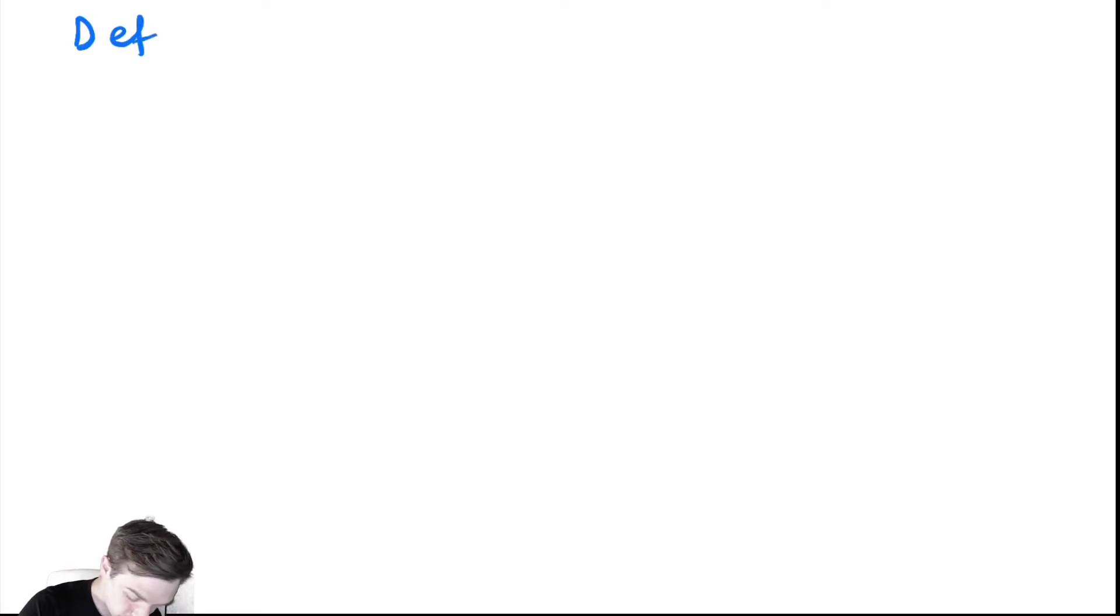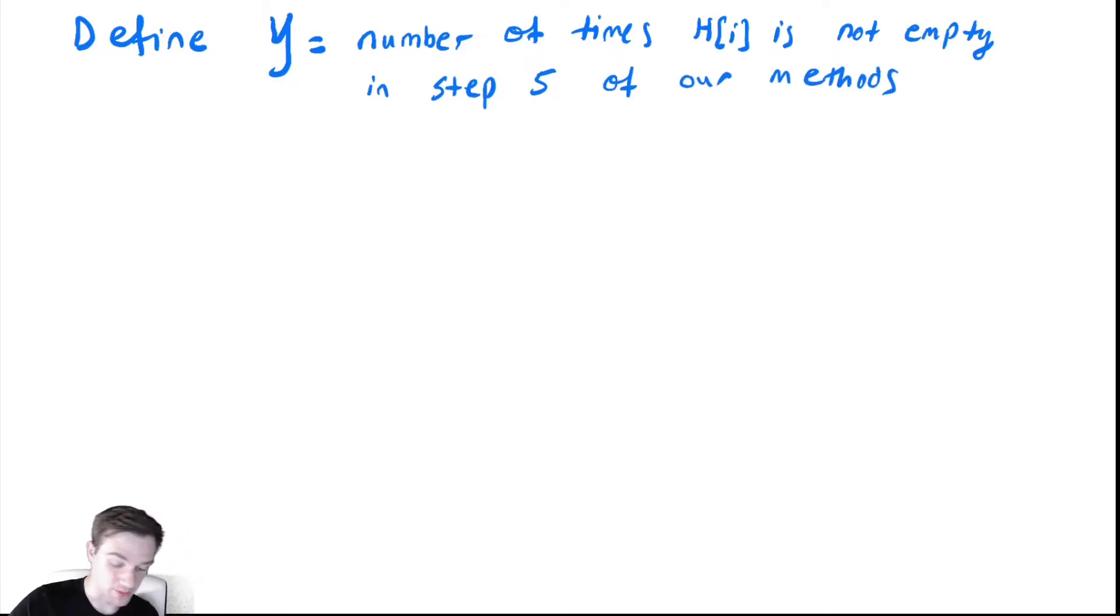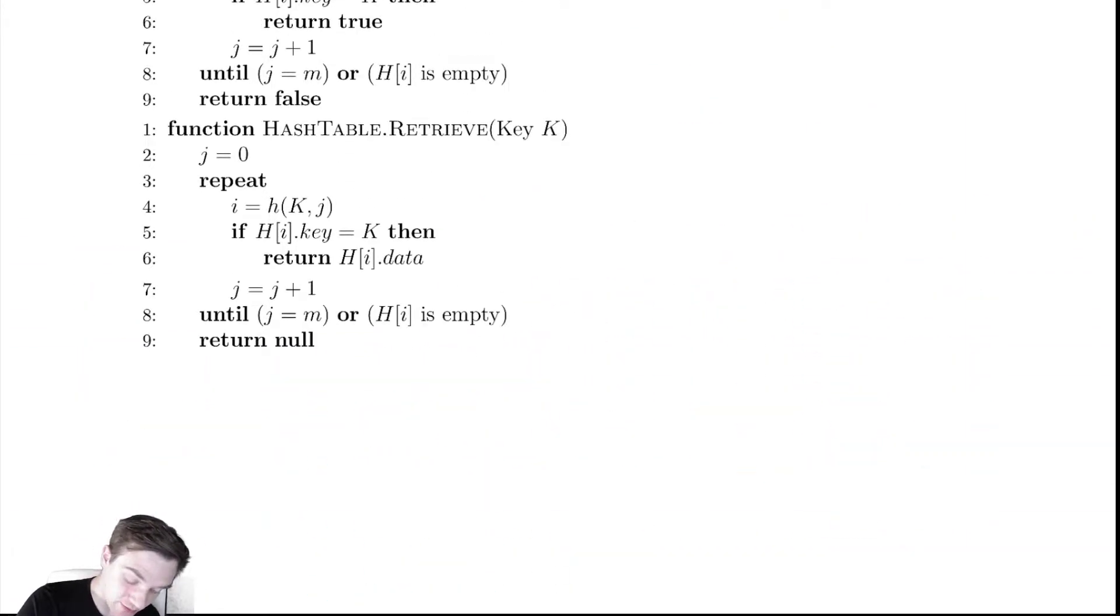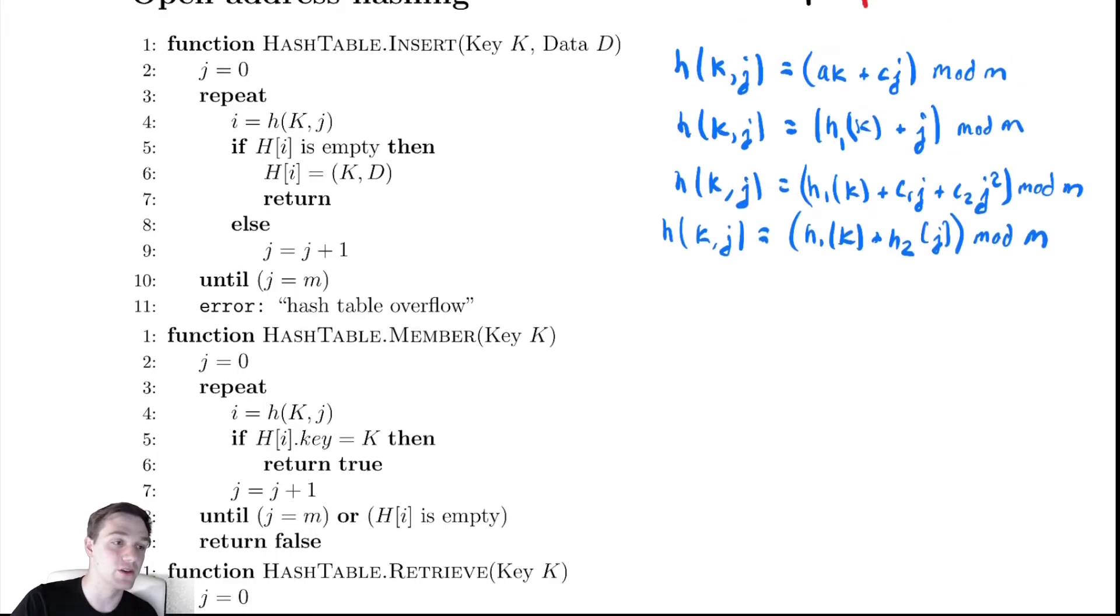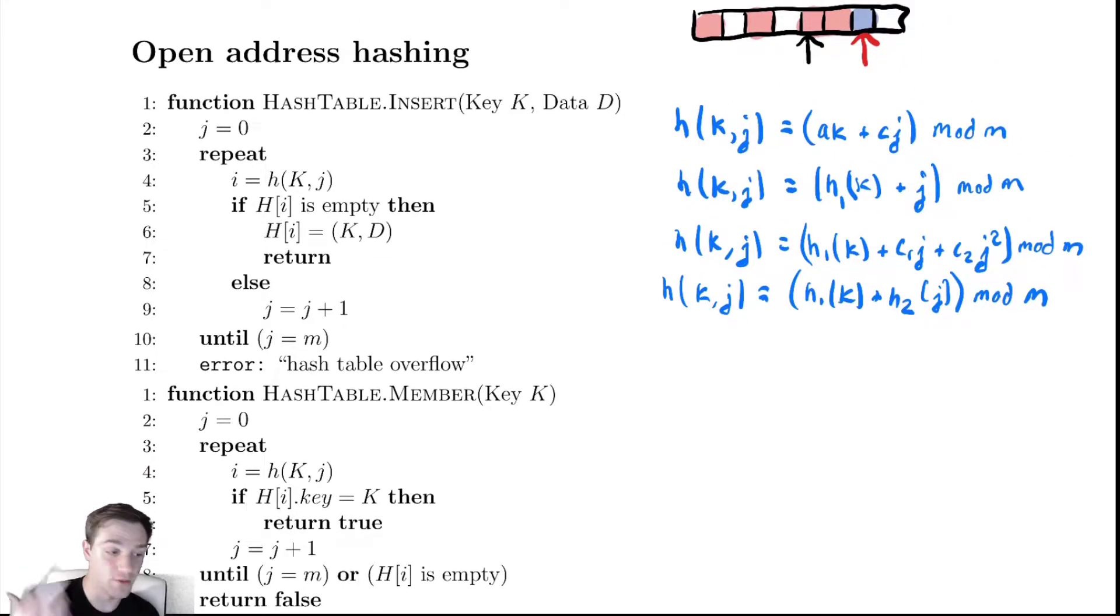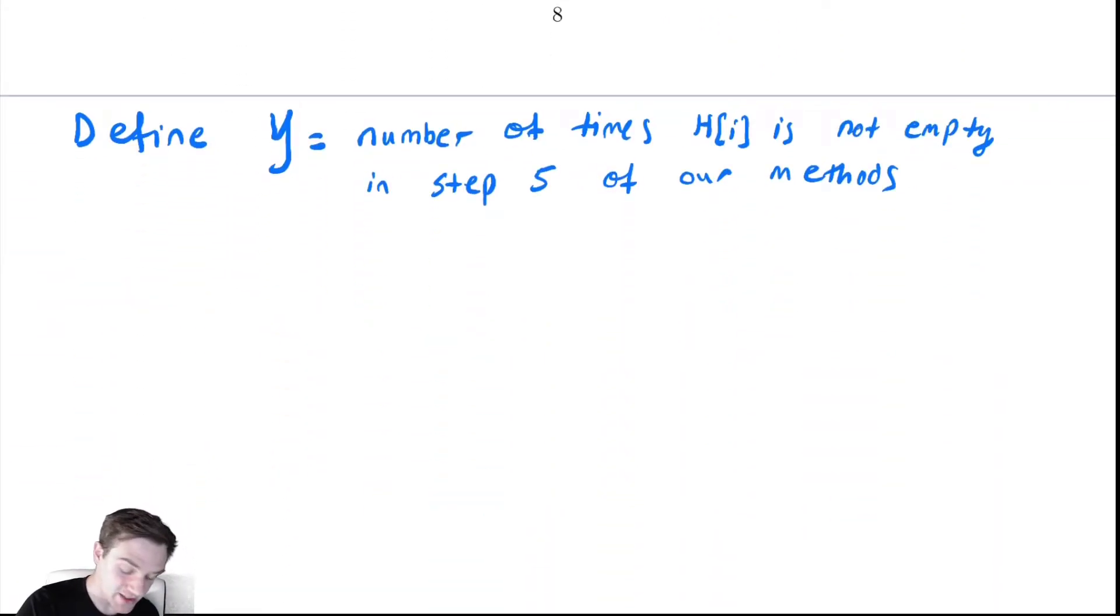We'll define Y equal to the number of times h[i] is not empty in step 5 of our methods. Let's scroll up and verify. In step 5, we're always checking whether the location matches the key. We're doing this for insertion, but for all methods it's the same.